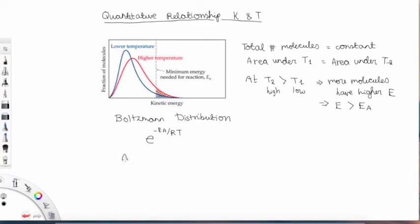And so from here we can get the Arrhenius equation, which is something you'll need to know. And this is K, which is the rate constant, being equal to A e to the power of negative Ea over RT. So as you can see, this part is from the Boltzmann distribution.